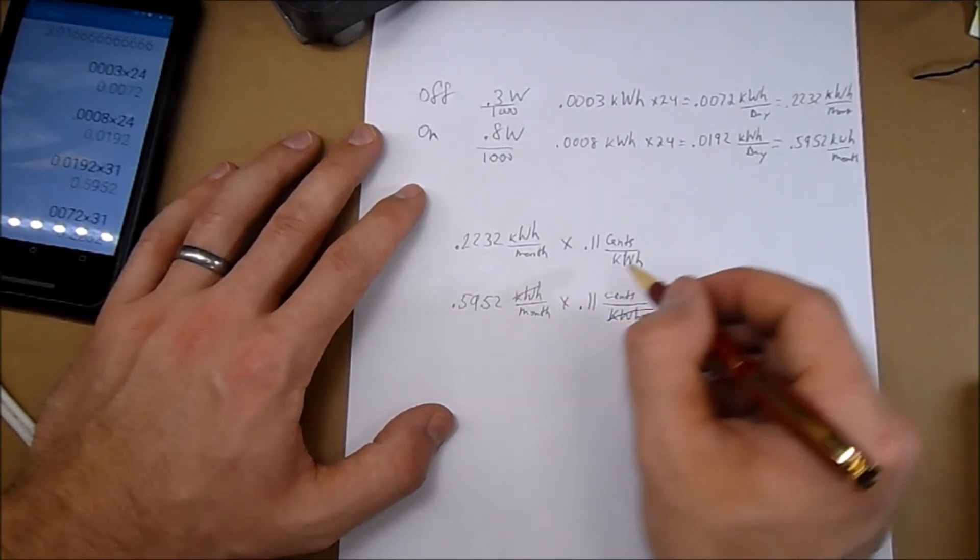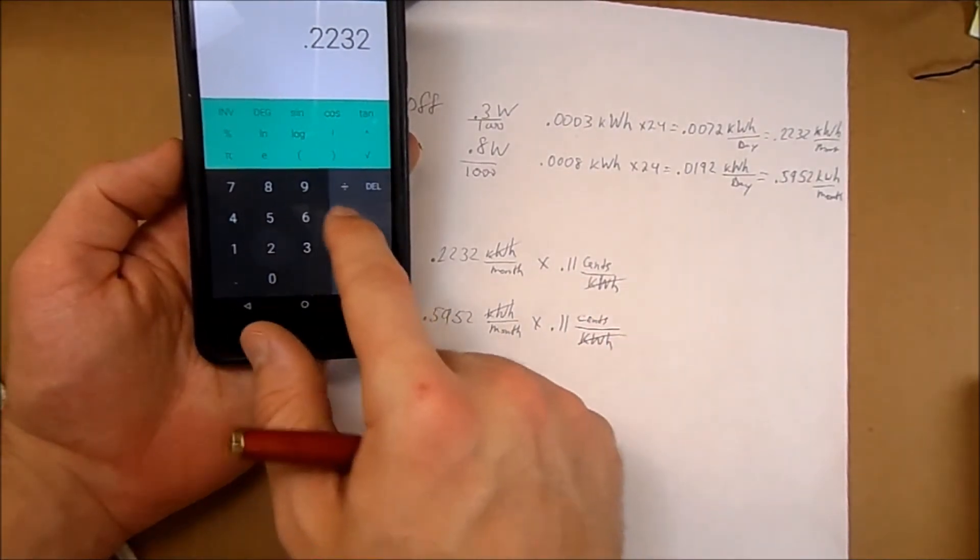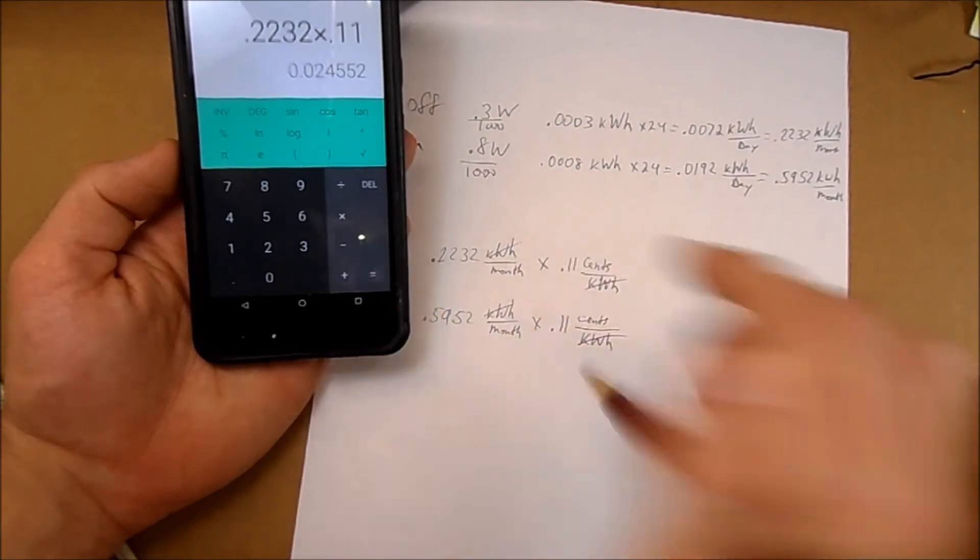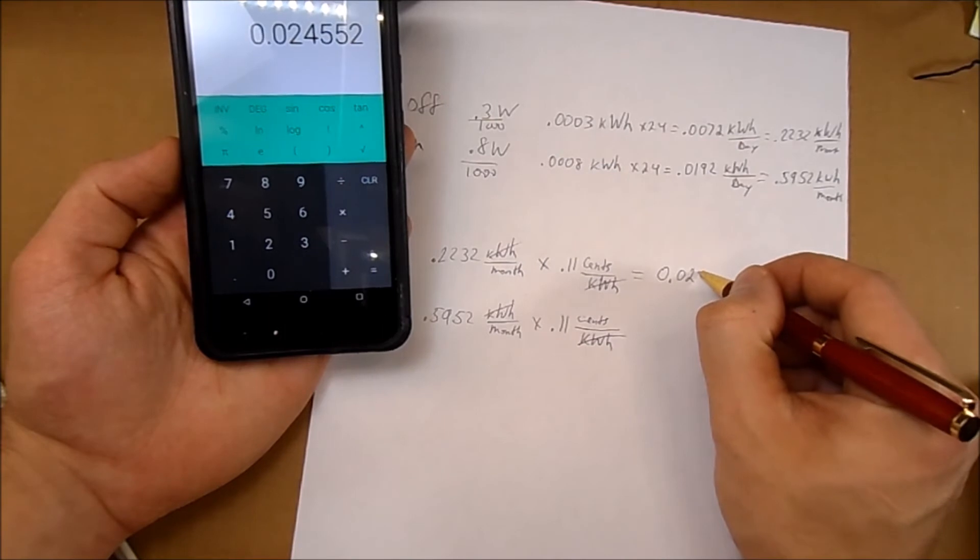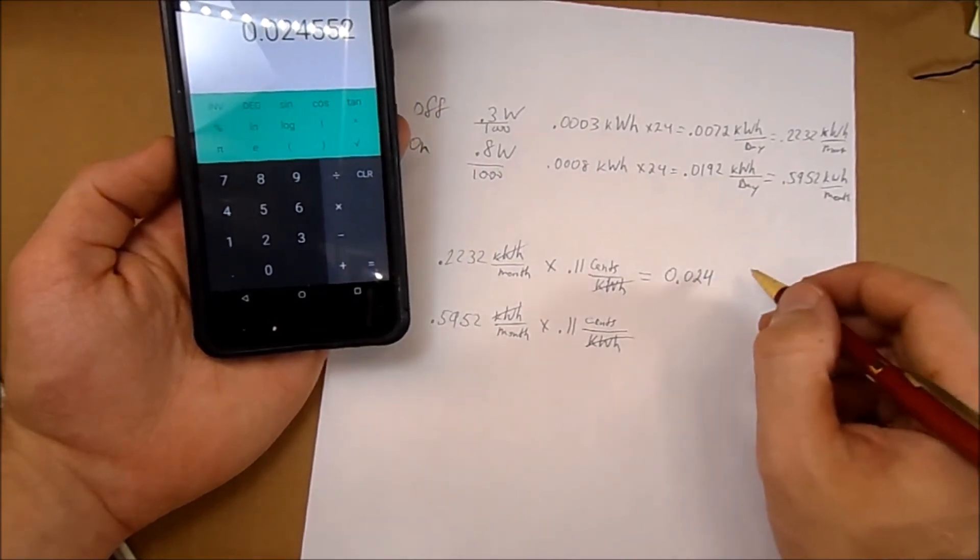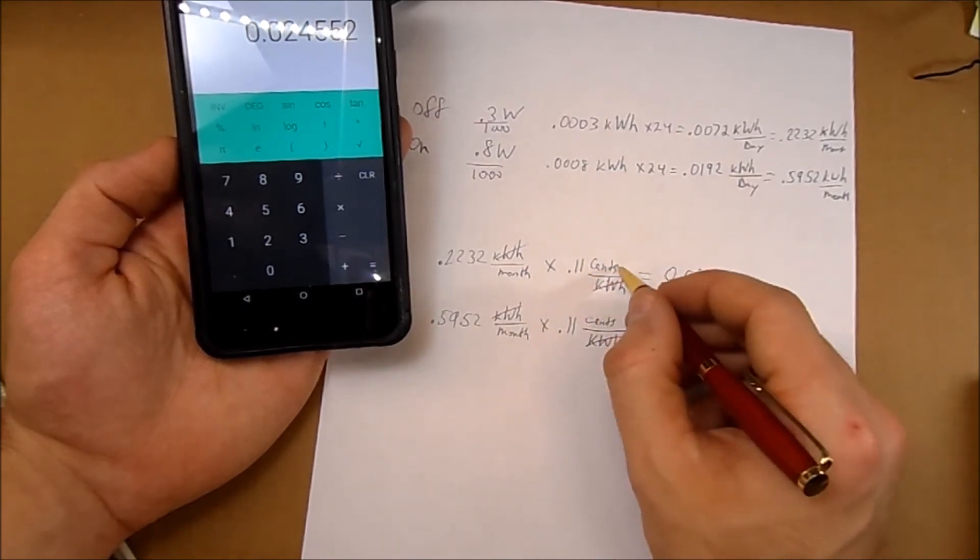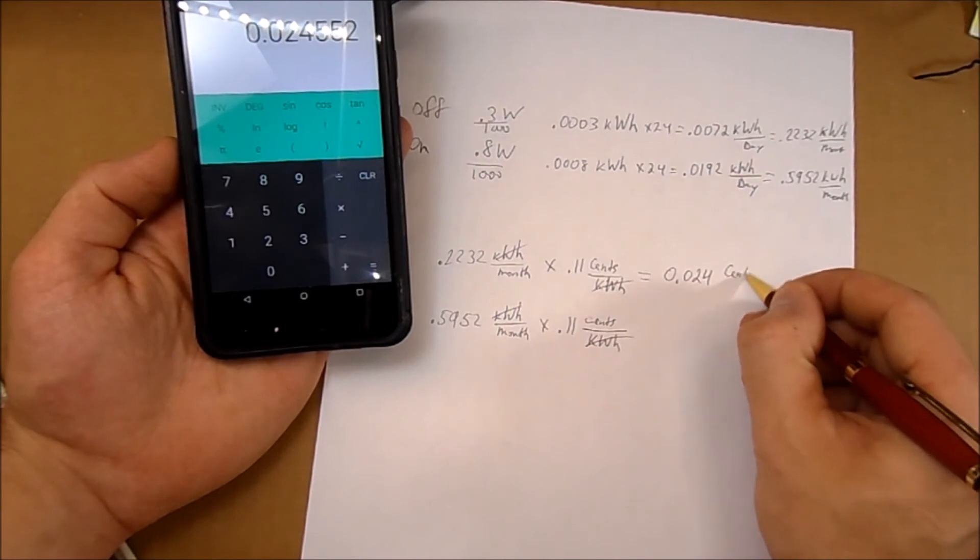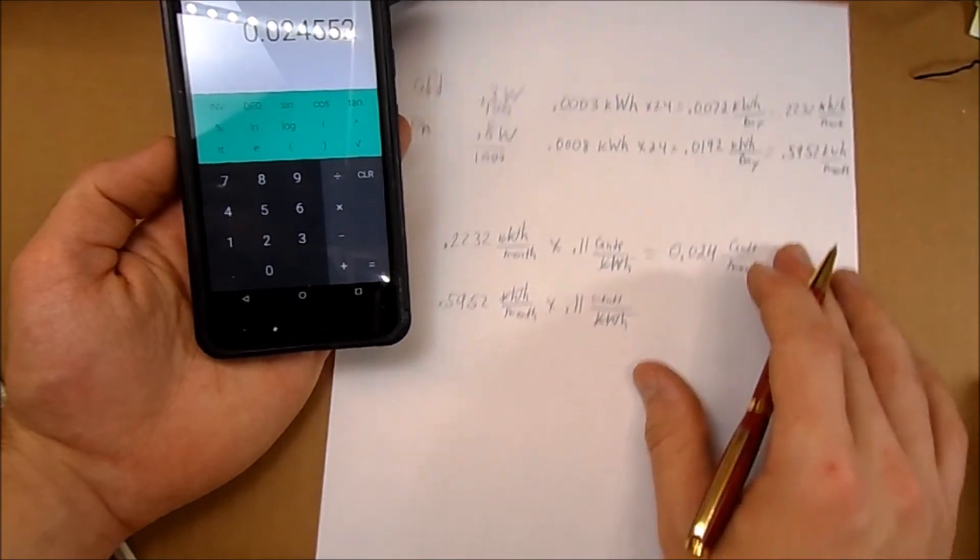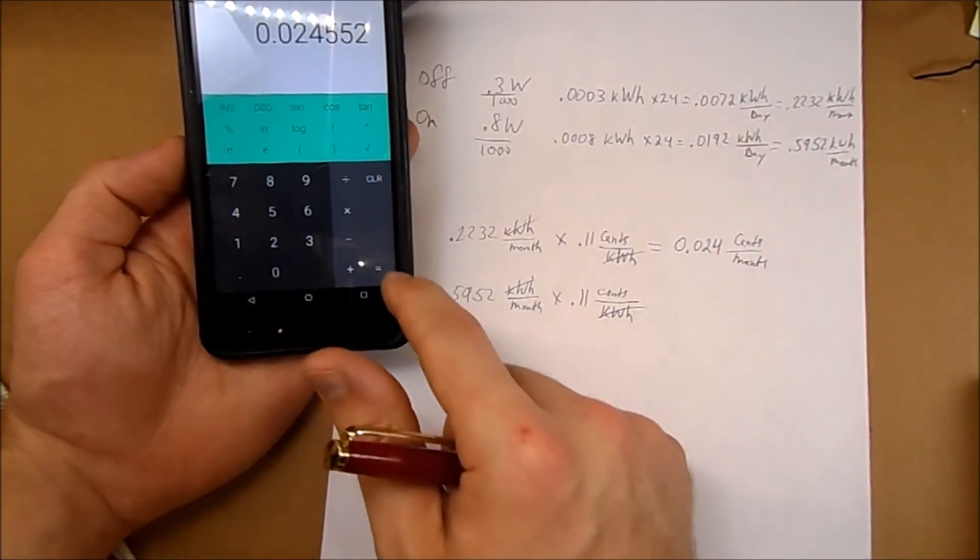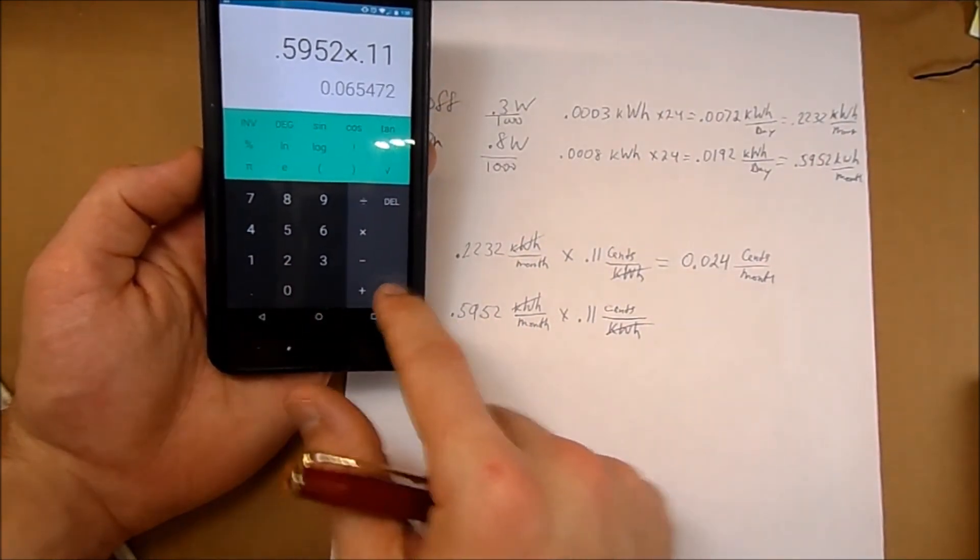Now the kilowatt hours would divide out. You would be left with 0.2232 times 0.11 equals 0.024, and I'll just round it with three decimal places. And we're left with cents per month. It'll be 2.4 cents per month. And over here this would cost you 0.5952 times 0.11 equals 0.065, and we're left with cents per month.